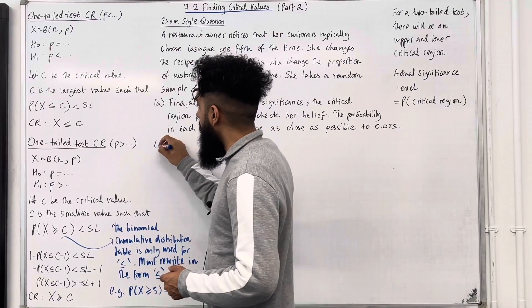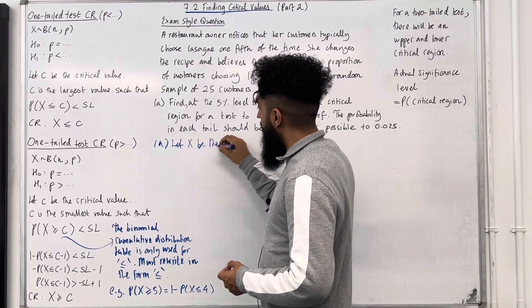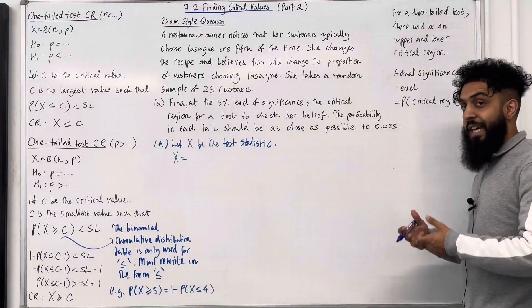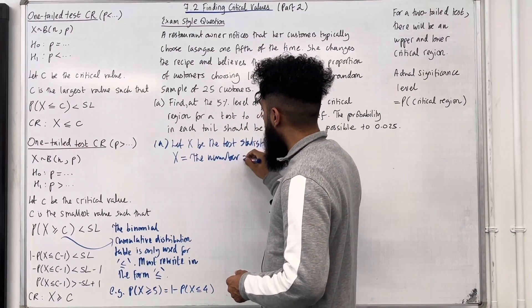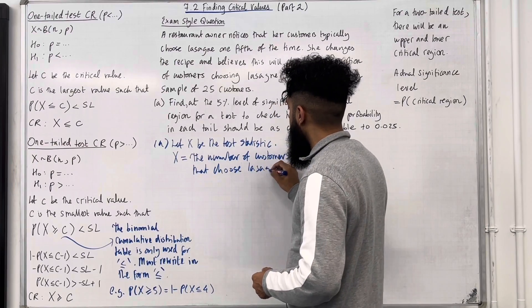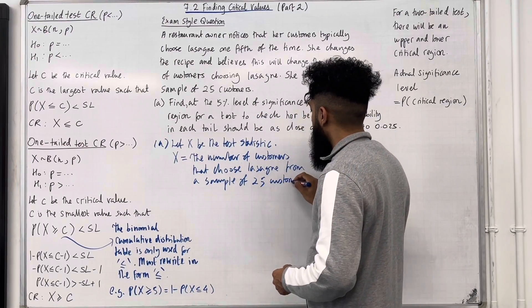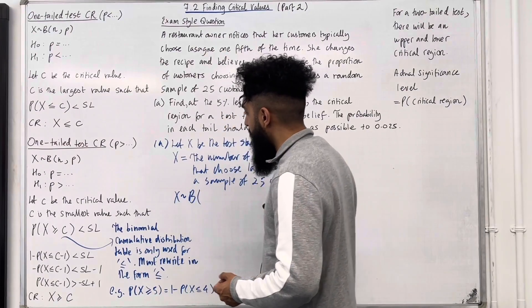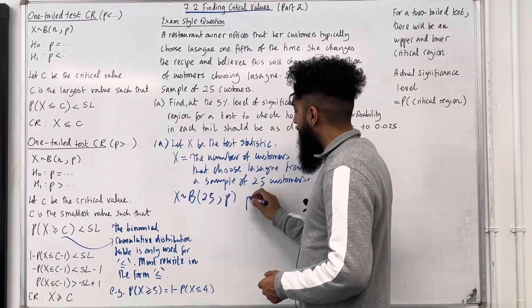Let's have a look at Part A. I'm going to start off by stating the test statistic. Let capital X be the test statistic. X is equal to the number of customers that choose lasagna from a sample of 25 customers. X takes on a binomial distribution with 25 trials and a fixed probability P, where P is equal to 1 over 5.